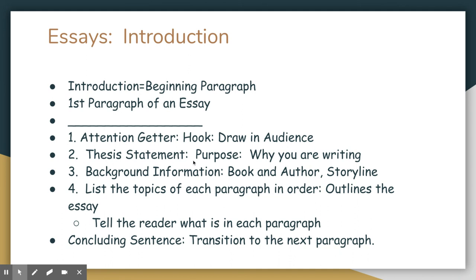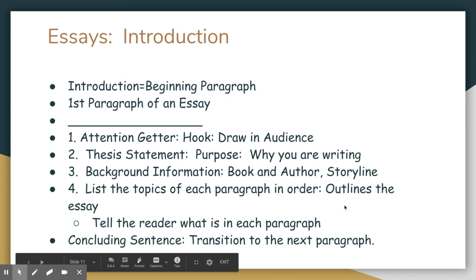Then we need a thesis statement which is a purpose. Why are we writing this essay? What is the purpose behind it? Then we start to give a little background information: the book and the author, maybe some of the storyline. Lastly we're going to be talking about listing the topics that we're going to see in each paragraph in order. So this outlines your essay. It says first we're going to read about this, next we're going to learn about this, last we're going to learn about this, and this is all in that introduction paragraph. Our conclusion sentence just helps us transition into our first body paragraph which would be the first thing on your outline for your essay.